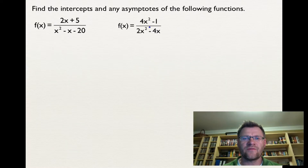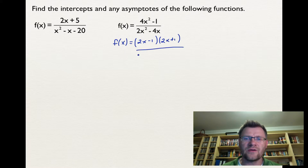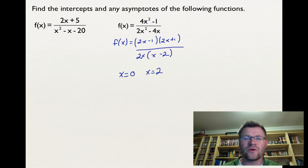Our second example is f(x) = (4x² - 1) / (2x² - 4x). We factor the numerator as (2x - 1)(2x + 1), and factor the denominator by taking out the greatest common factor of 2x, giving 2x(x - 2). For vertical asymptotes: x = 0 is one vertical asymptote and x = 2 is another. For the horizontal asymptote, both numerator and denominator have degree 2, so the asymptote is at y = 4/2 = 2.